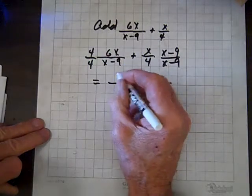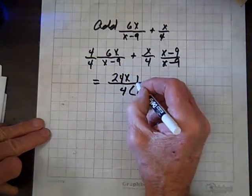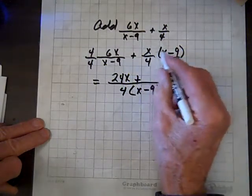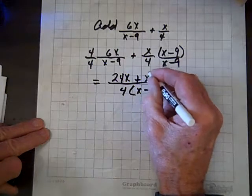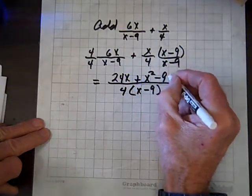4 times 6x is 24x plus, and remember, this division bar acts as a grouping symbol, so x times x is x squared, and x times minus 9 is minus 9x.